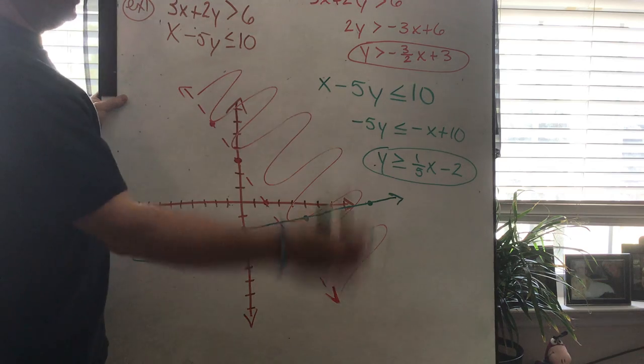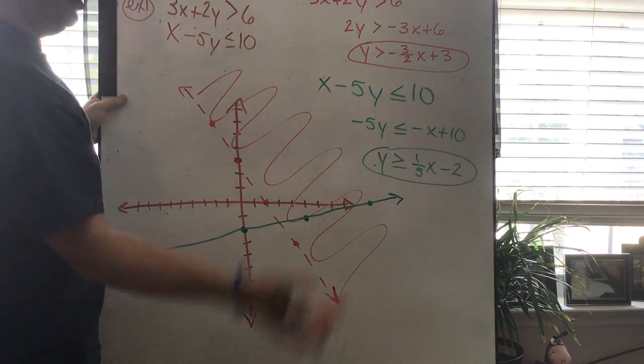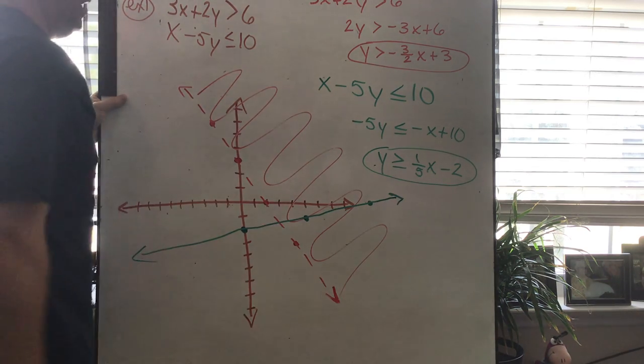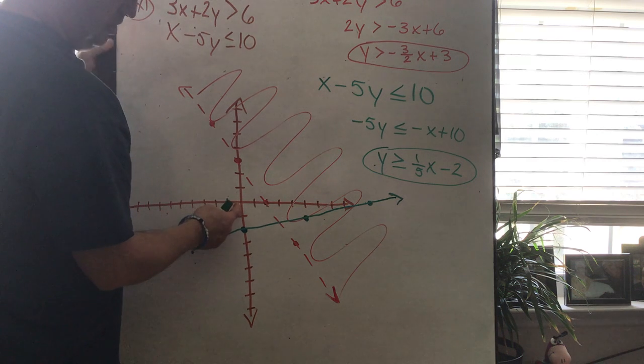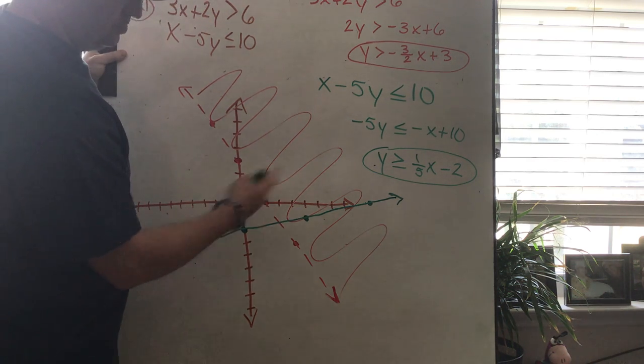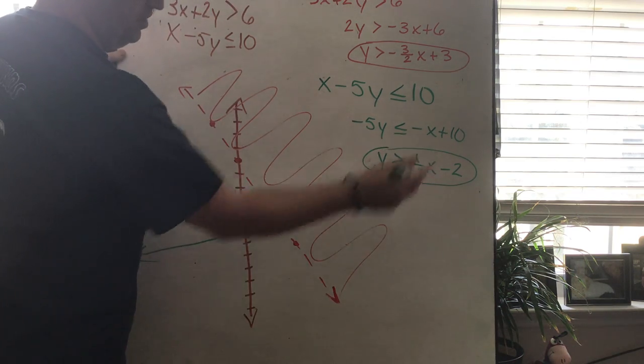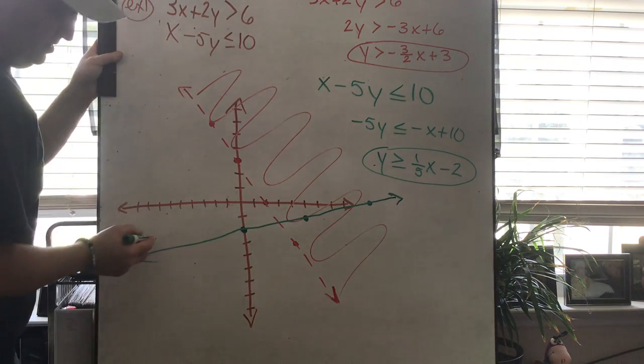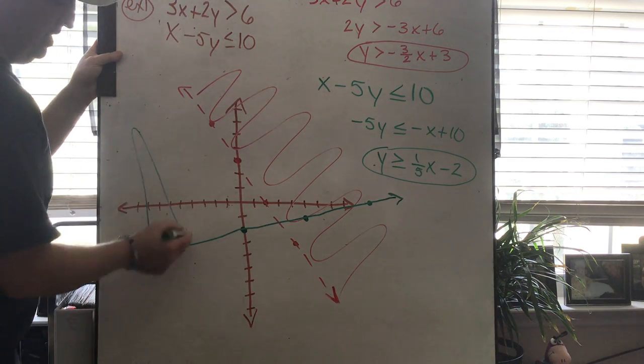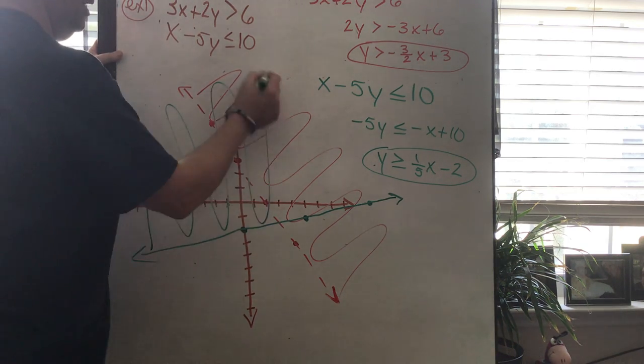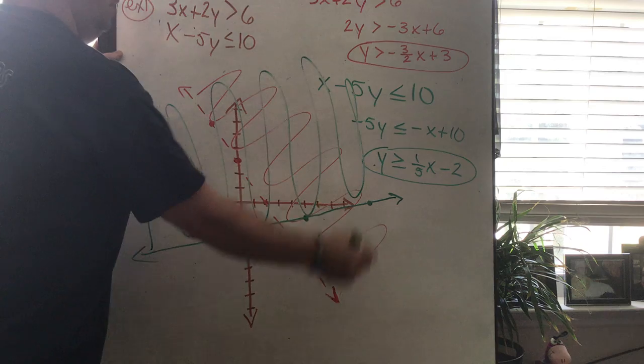We then have to determine which side of the line we want to shade on, because one side will be true, one side won't be. Once again, pick a point. 0,0 is available, so let's check it. Is 0 bigger than 0 minus 2? In other words, is 0 bigger than negative 2? Yes, it is. So we're going to shade the side of the line where 0,0 is. There we go.